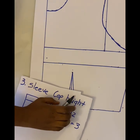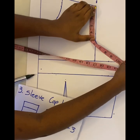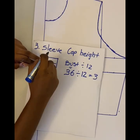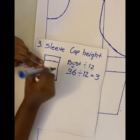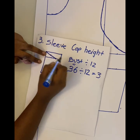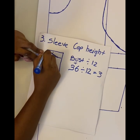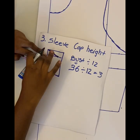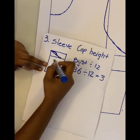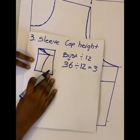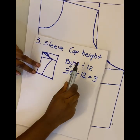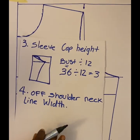Then on your basic bodice measure your armhole depth to ensure the sleeve fits. Draw a straight line from the top to the armhole depth point, find the midpoint, and go up half an inch, then draw a curve. This gives you an accurate sleeve cap height. Draw a straight line from that point to meet your wrist point. The formula is simply bust measurement divided by 12.